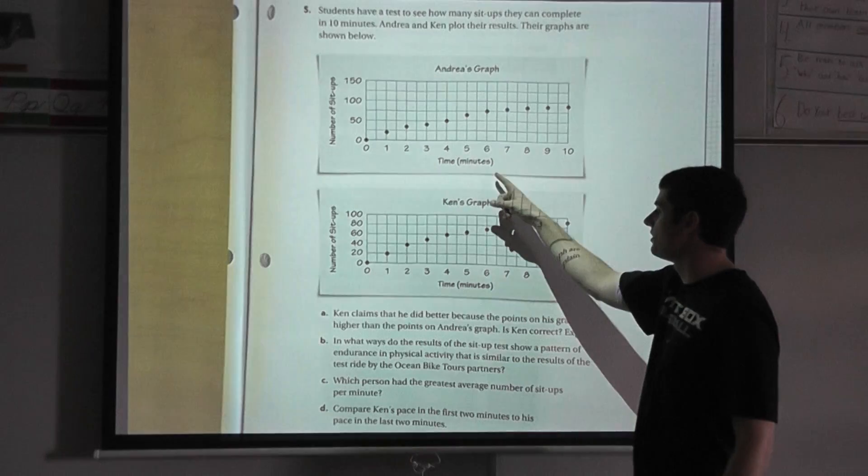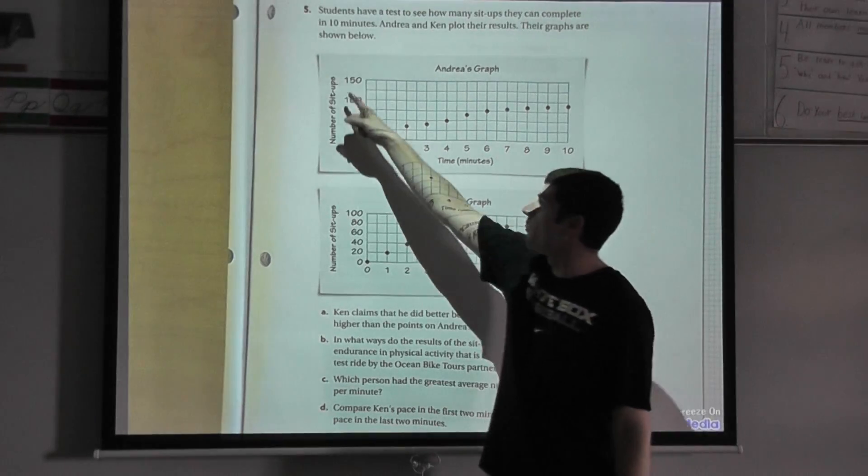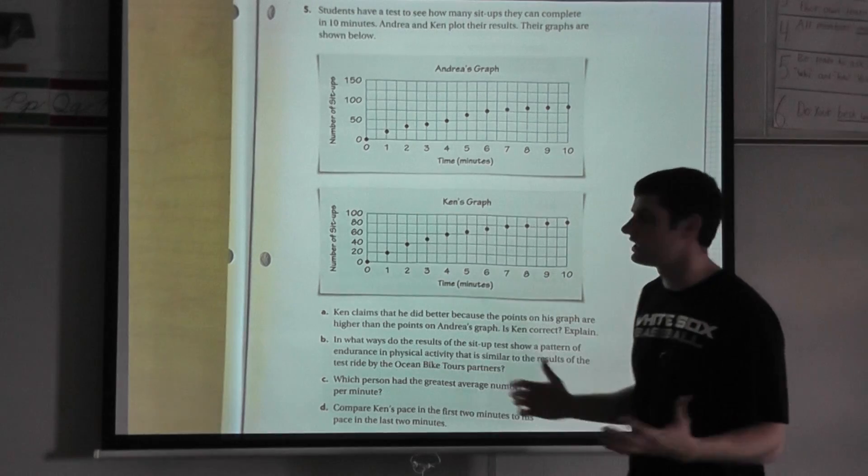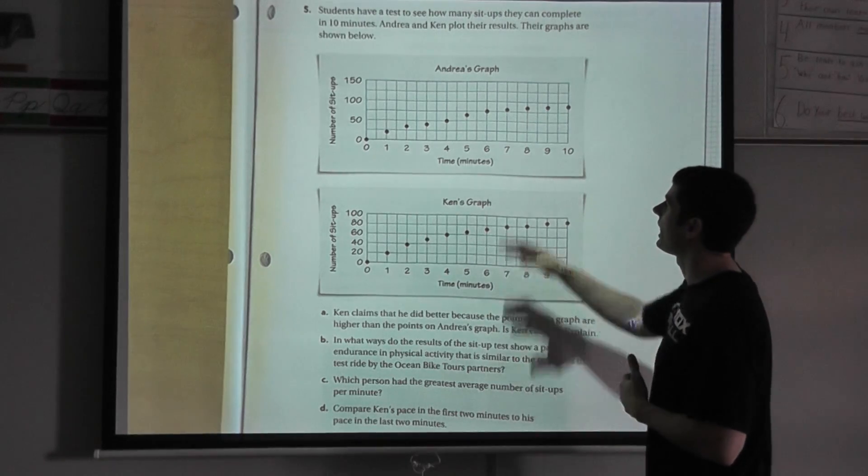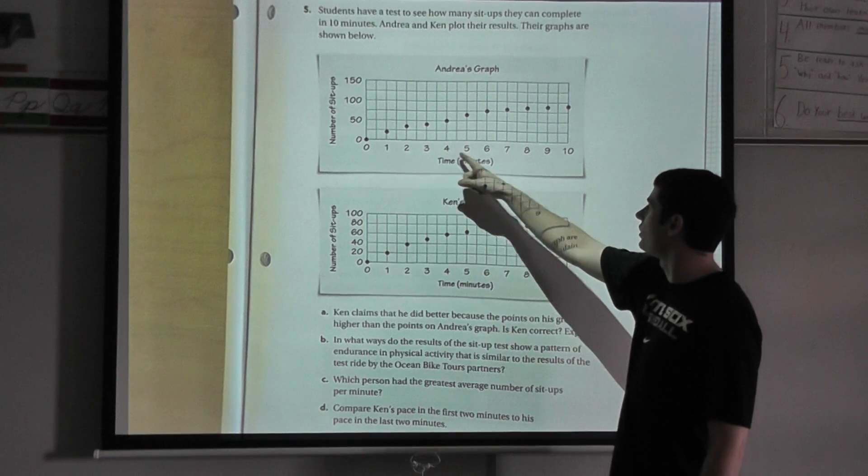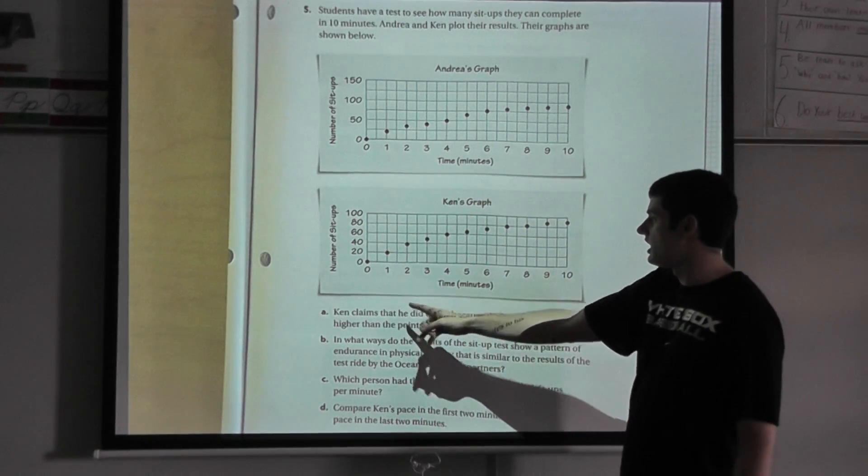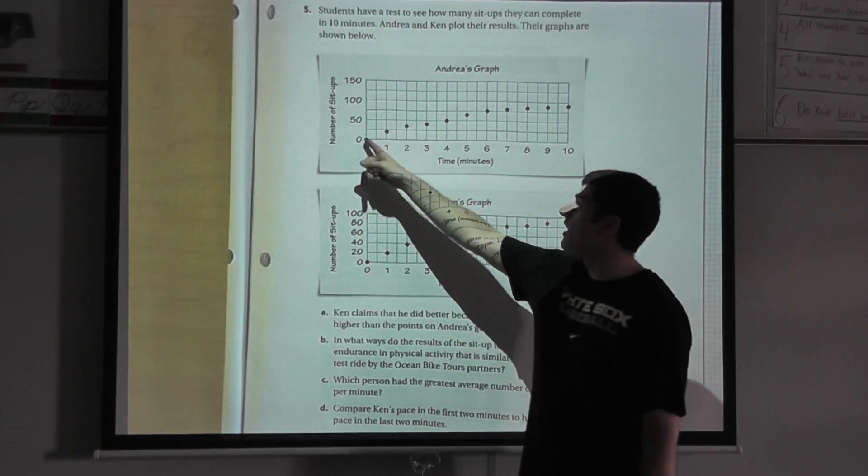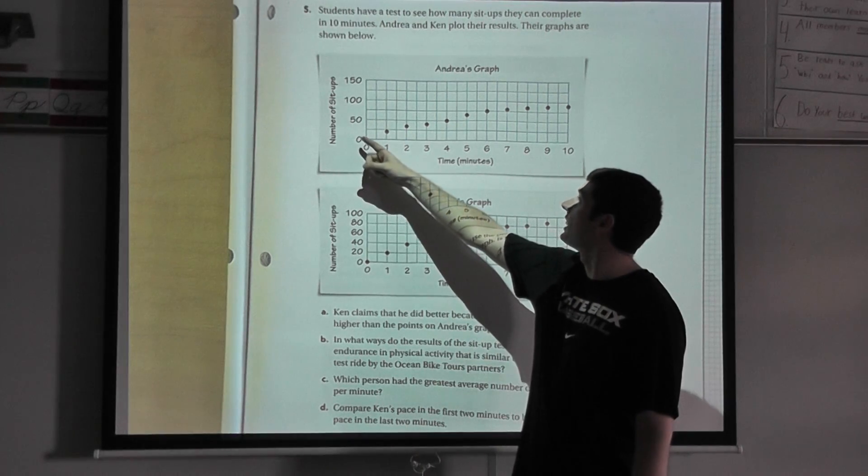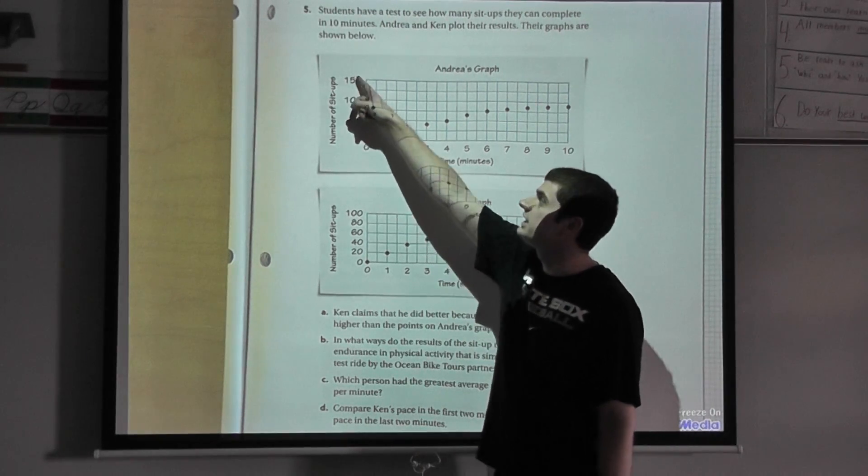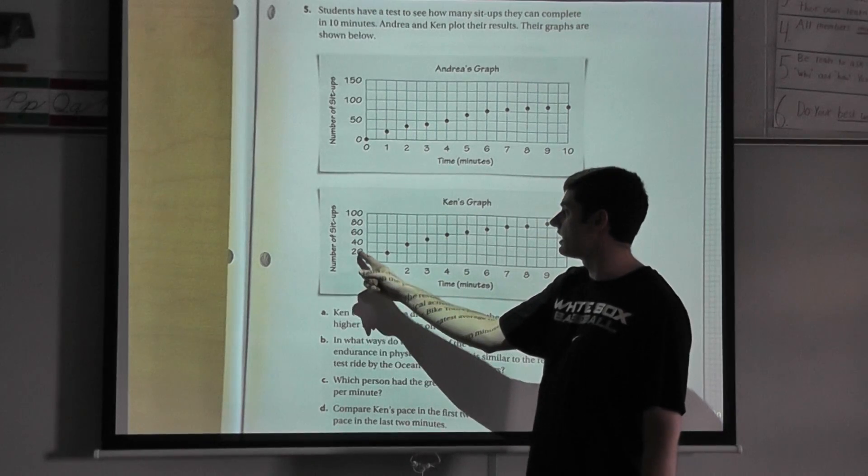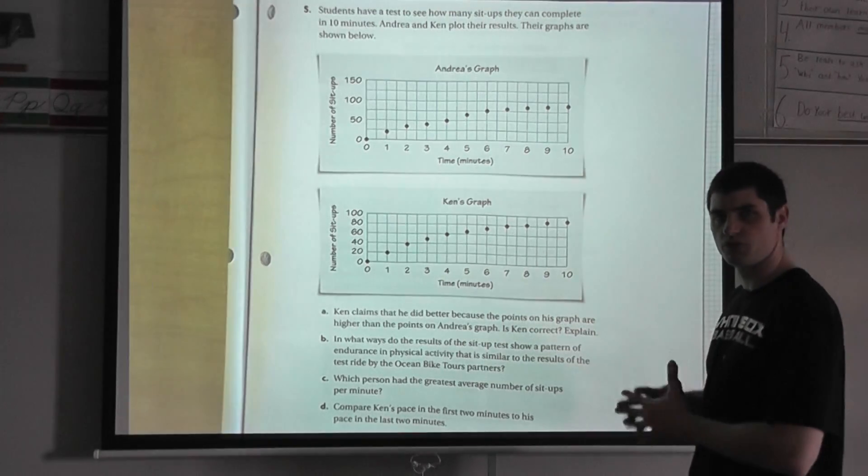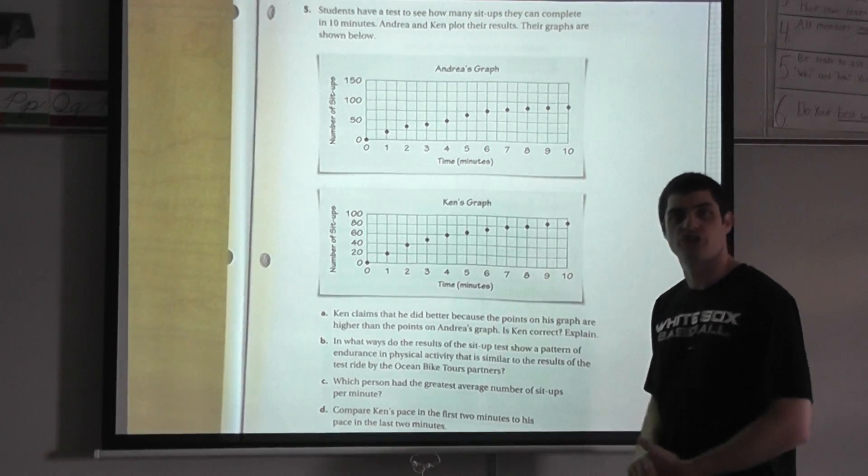Let's take a look. On the x-axis, they put their time in minutes, both of them, and on the y-axis they put number of sit-ups. I see Andrea did an interval of one on the bottom for her minutes, and Ken's graph, he did an interval of one on the bottom. For the number of sit-ups, Andrea decided to do an interval of 50 each time, and Ken decided to do 20 each time. I'm kind of analyzing what these two students wrote.